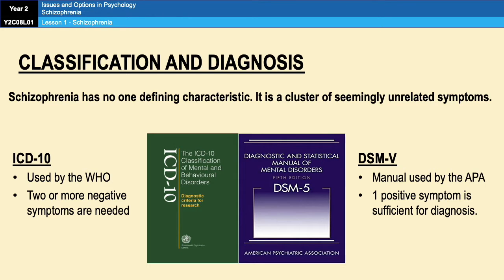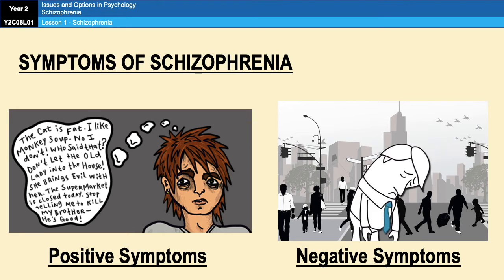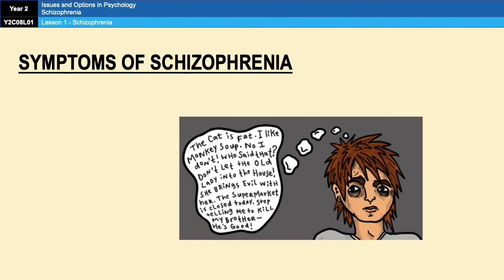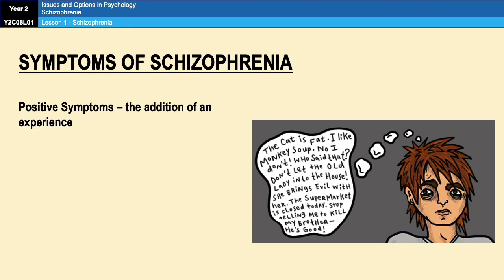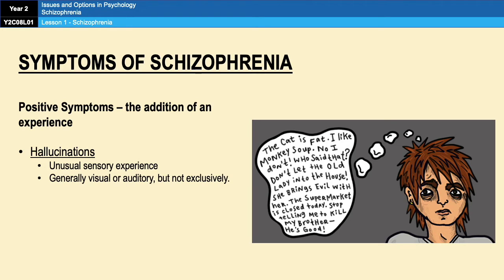There are two types of symptoms for schizophrenia: positive symptoms and negative symptoms, and all symptoms can be grouped into these two separate camps. Positive symptoms don't mean good symptoms — they mean an addition of an experience, something you are gaining that you didn't have before. An example is hallucinations, which refer to unusual sensory experiences that can be picked up from any sense, sometimes related to the environment and sometimes not. For example, people might hear voices criticizing them, or see facial distortions, or see animals or people that aren't there.